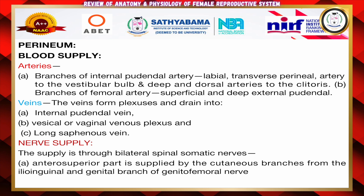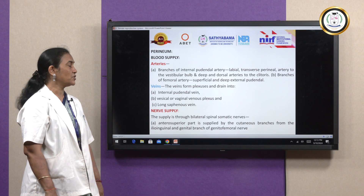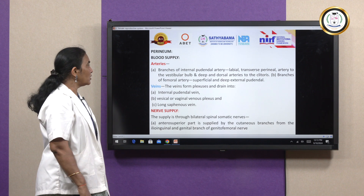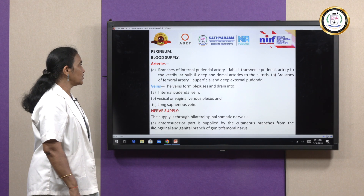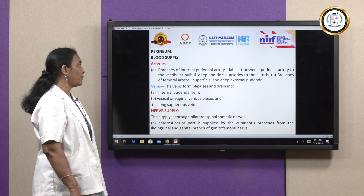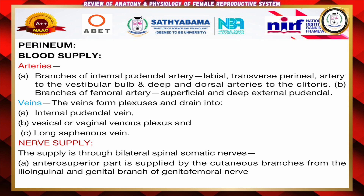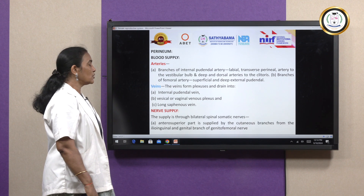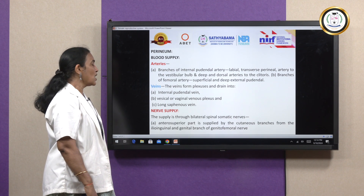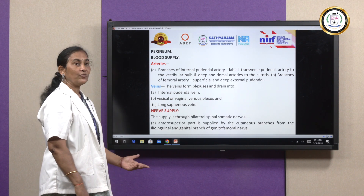Regarding blood supply to the perineum: the internal pudendal artery supplies blood to the labial, transverse perineal, and artery to the vestibular bulb, and the deep and dorsal arteries to the clitoris. The branches of the femoral artery supply the superficial and deep external pudendal region. For the veins, they drain from the plexus into the internal pudendal vein and then into the vaginal venous plexus and long saphenous vein.